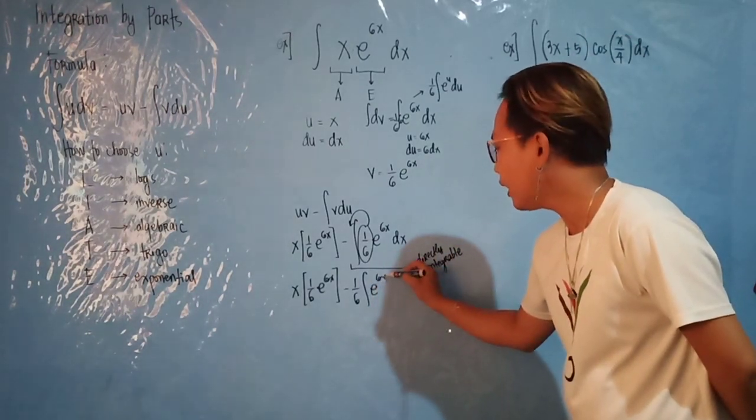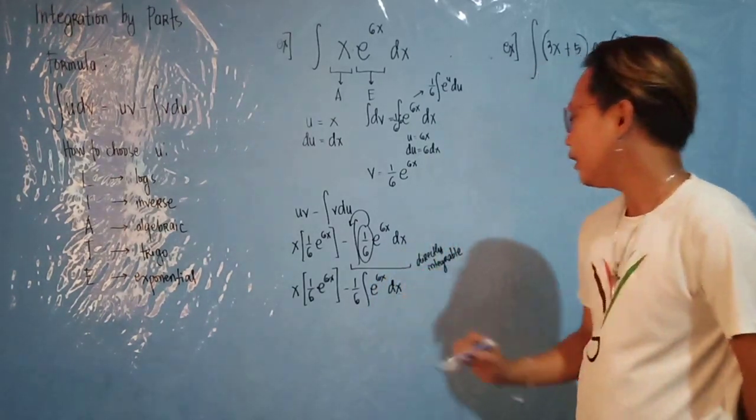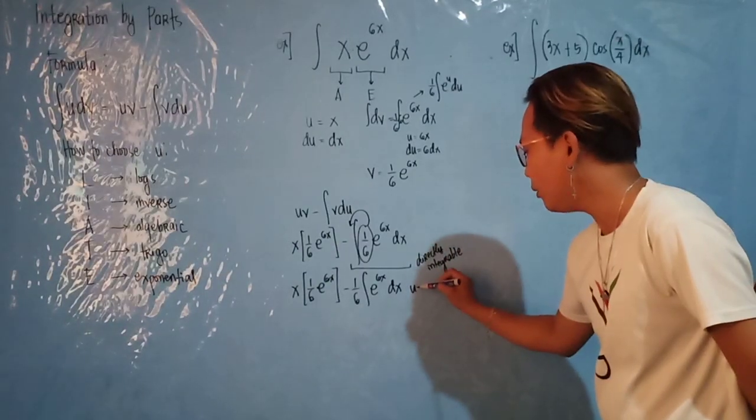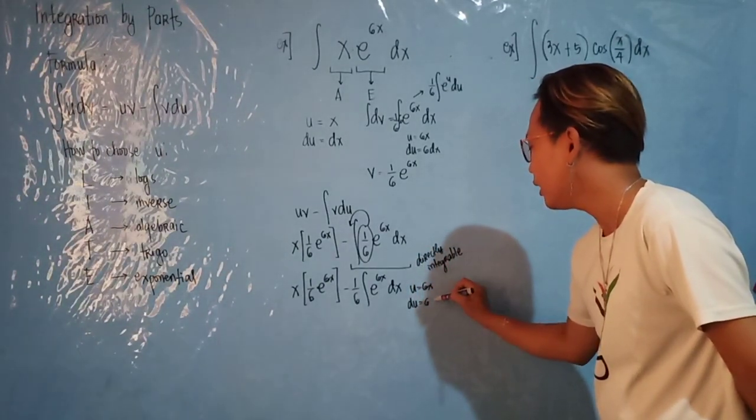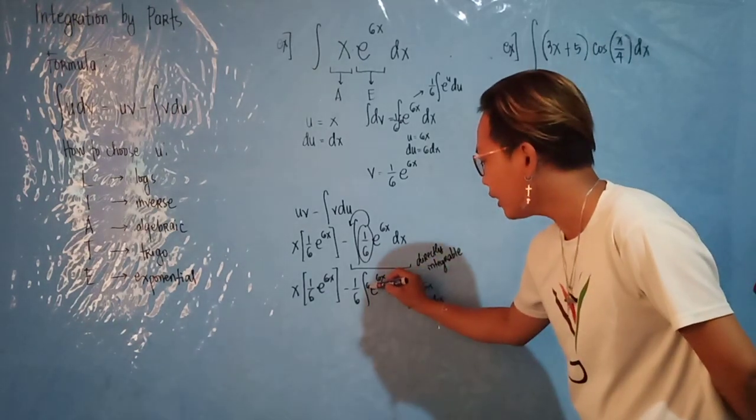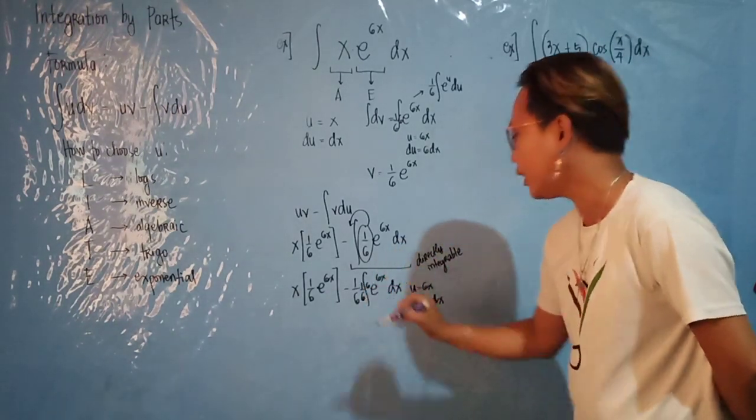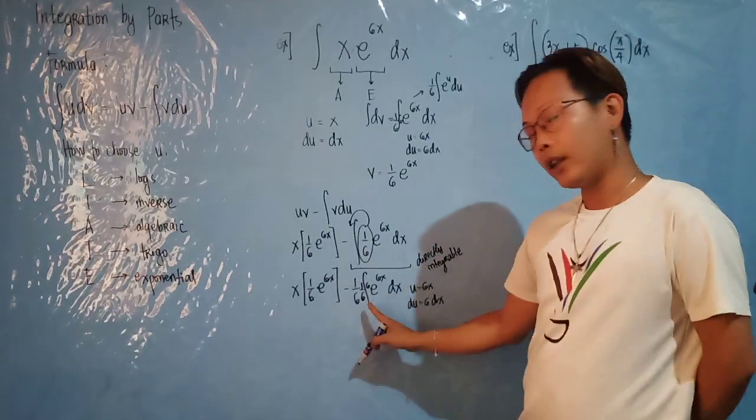Then the integral of e raised to 6x dx. By setting u as 6x, then du is 6 dx. You will have to insert 6, balanced by 1 over 6. You will now have 1 over 36.